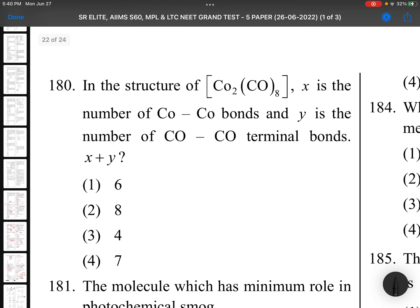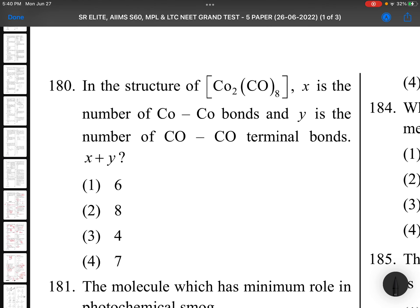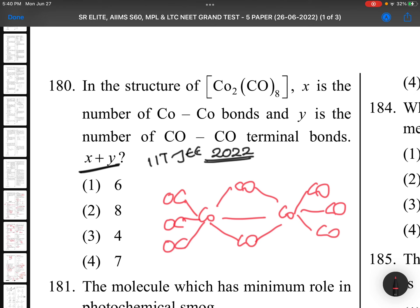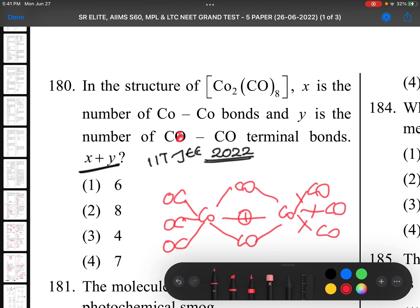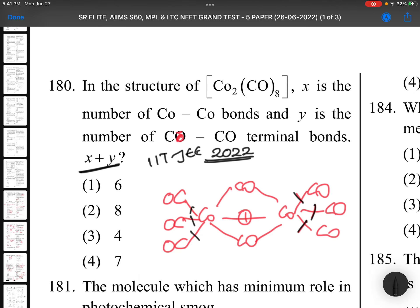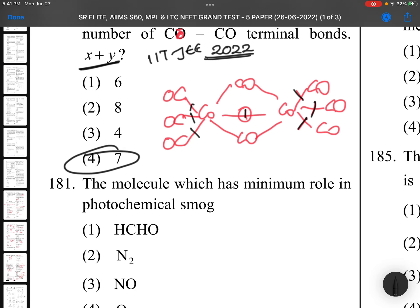Coming to 180th question. In the structure of Co2(CO)8, X is the number of Co-Co bonds and Y is the number of Co-CO terminal bonds and X plus Y. This is IIT JEE question 2022. Co2(CO)8 structure is like this: one bond bridging and two terminal. This is NCERT structure, you can check this in NCERT book. Deep block elements and coordination chemistry. Co-Co bonds: 1, 2, 3, 4, 5, 6 terminal CO bonds and 1 Co-Co bond. So it should be 7. This is IIT JEE 2022 question.